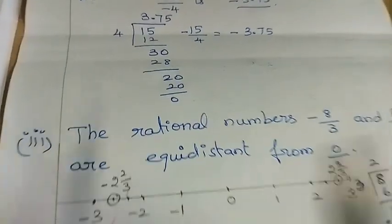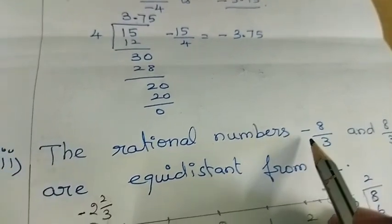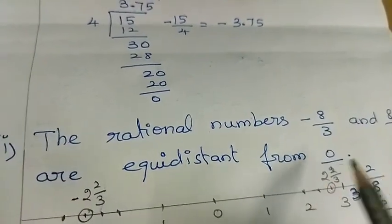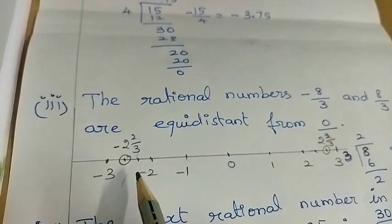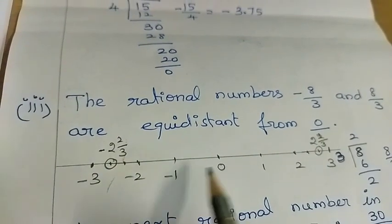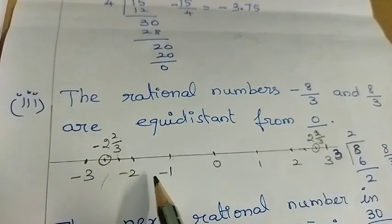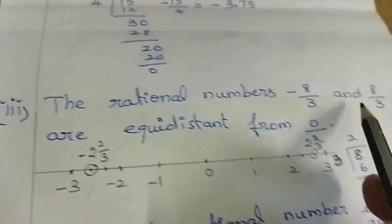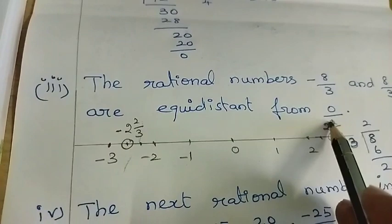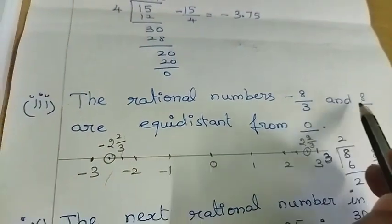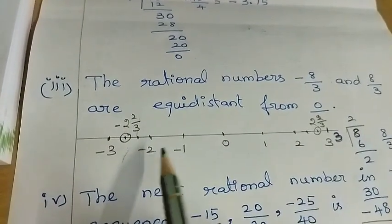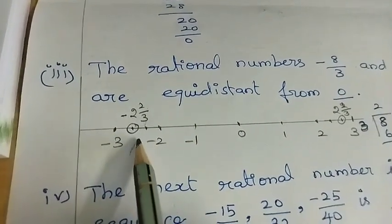Third one: The rational numbers minus 8 by 3 and 8 by 3 are equidistant from? These numbers have opposite signs, so their signs are different but magnitudes are equal — equidistant means the answer is 0. 8 by 3 is equal to minus 8 by 3 in distance from 0, so the point is 0.